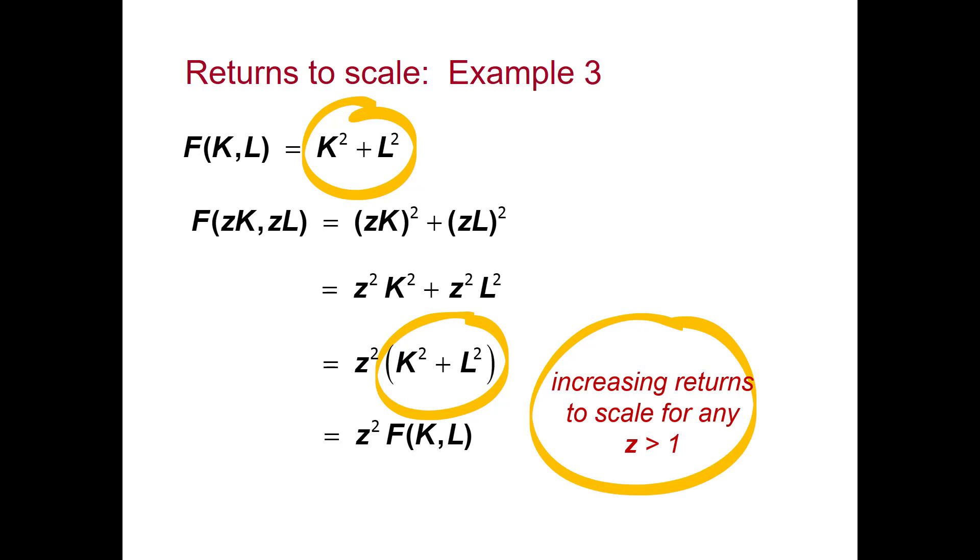This is the general process we go through to test returns to scale. We increase both inputs by the same amount, expand and simplify, and then see how the output is changed. Whether output increases by the same proportion as the inputs, or by a factor more, or by a factor less.